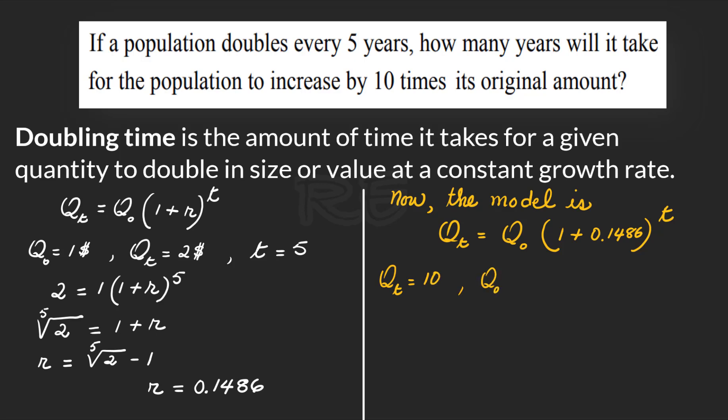Qt is 10 times the original amount. If the original amount is a dollar, then Qt will be 10 dollars, and we want to know the time.